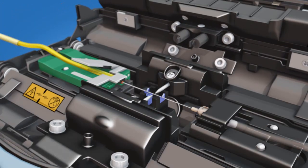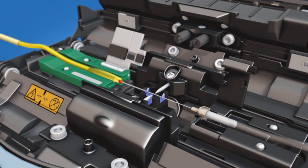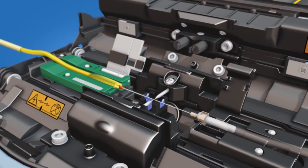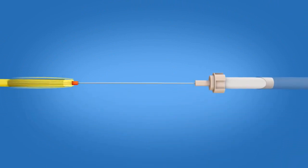Open the fiber holder and the ferrule unit holder clamps after the splicer has performed a tension test on the splice. Continue to keep tension on the splice while removing it from the fusion splicer.